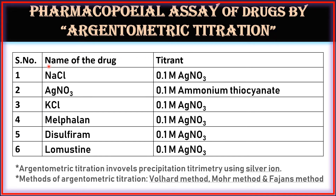These are the names of the drugs and these are the titrants. First, sodium chloride, assayed by using 0.1 molar silver nitrate titrant. Second, silver nitrate, which is assayed by 0.1 molar ammonium thiocyanate. Third, potassium chloride, which is assayed using 0.1 molar silver nitrate titrant.